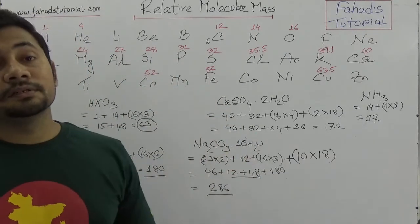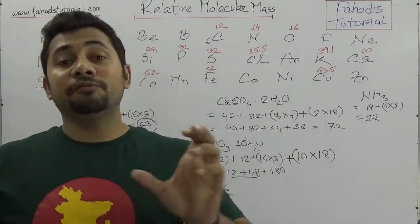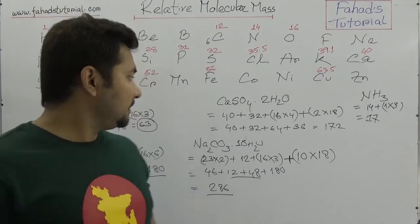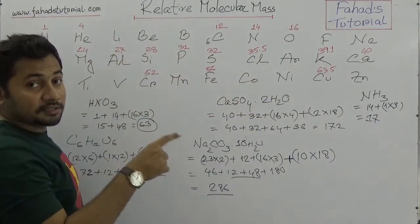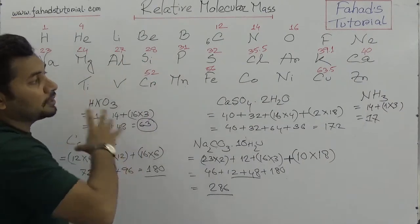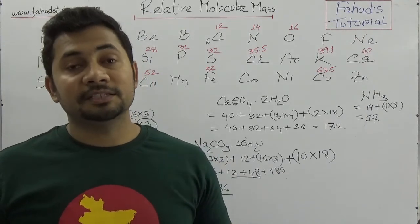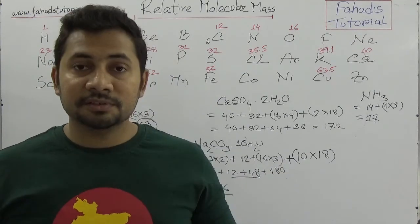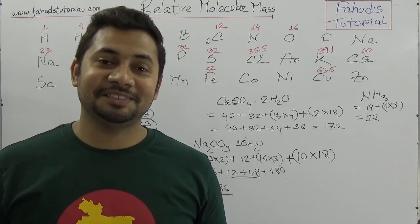Once you understand the chemical formula of any compound, you can figure out its molecular mass. To summarize: remember the atomic masses of the required elements in the compound. Even all 118 elements' atomic masses can be memorized with practice — the more practice you do in chemistry, the more you'll remember. Take care, let me know your requirements, stay well, stay blessed, bye.